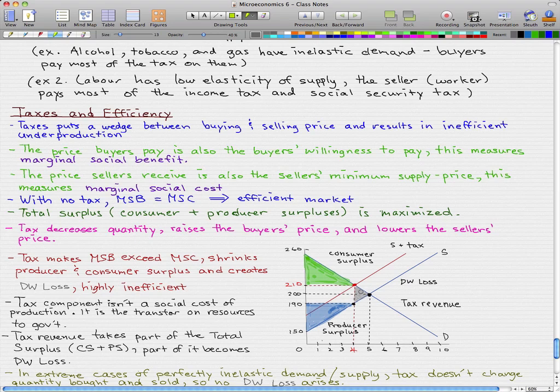We know that our deadweight loss is really this little triangle, and that's where I'll put it, and I'll label this as our deadweight loss. That would be our consumer surplus, and this would be our producer surplus.